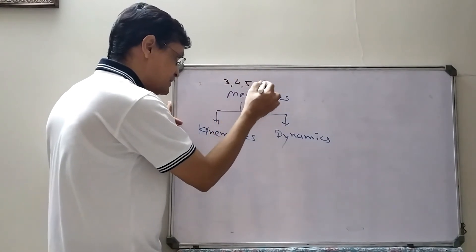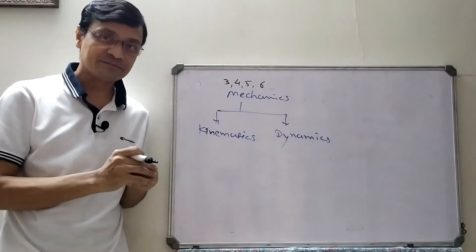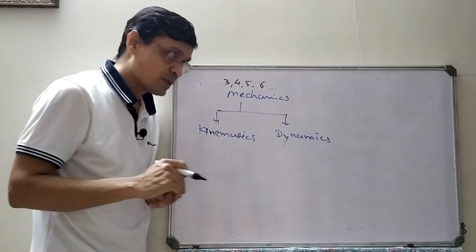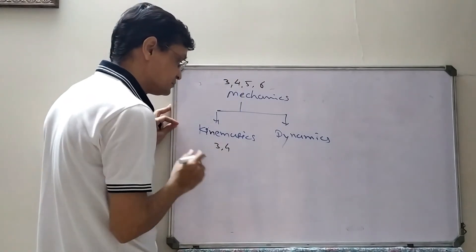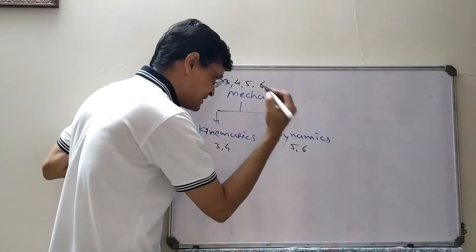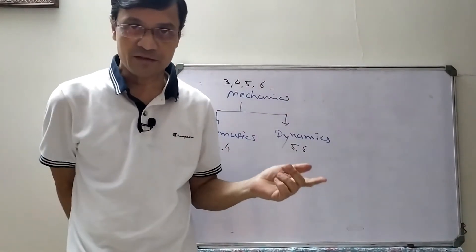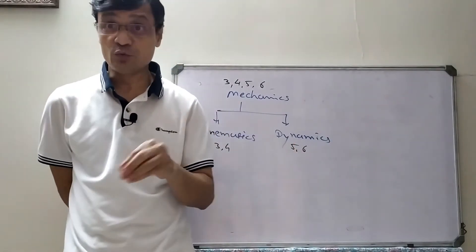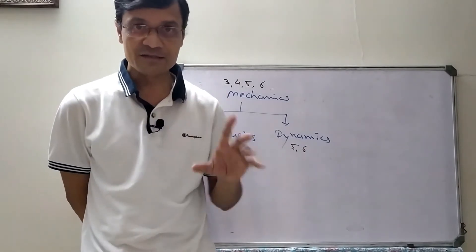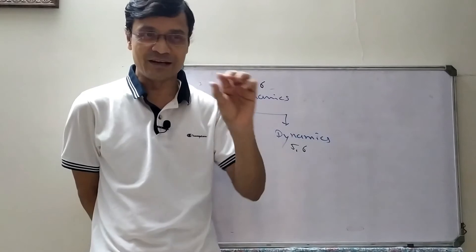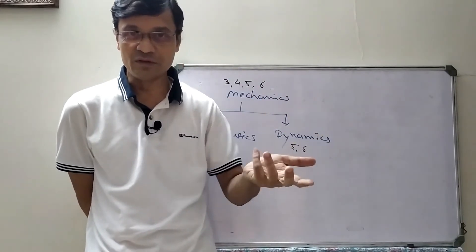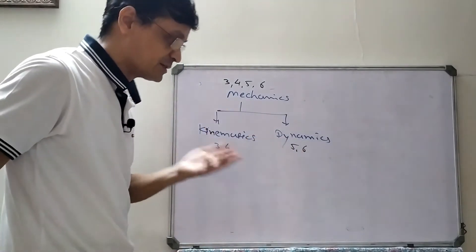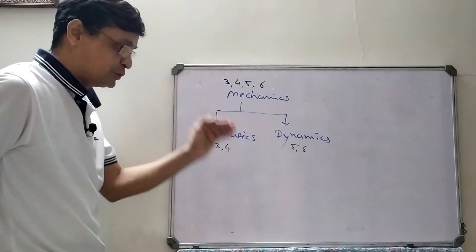Chapters three and four fall under kinematics, while chapters five and six come under dynamics. In kinematics, we only consider the object's motion and explain it — straight-line motion, rotational motion, circular motion — just the explanation. We will complete the fundamental equations of motion step by step.